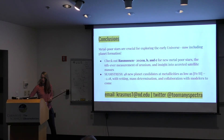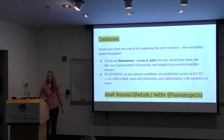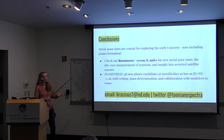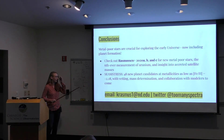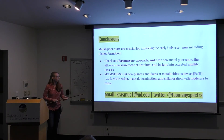In conclusion, metal-poor stars are crucial for exploring the early universe, which now includes planet formation. Check out my recent papers for new metal-poor stars, the sixth-ever measurement of uranium, and insight into accreted satellite masses. Keep an eye out for SEAMSTRESS and our 48 new planet candidates with metallicities as low as minus 2.28. Vetting, mass determination, and collaboration with modelers to come.